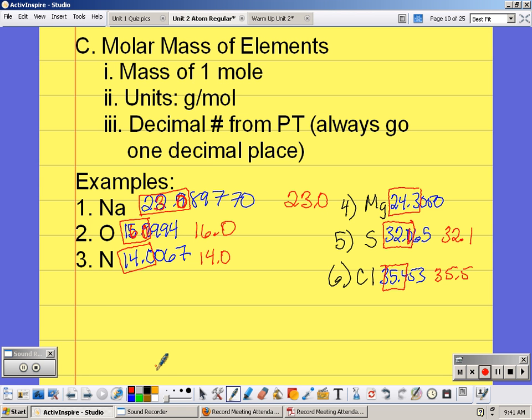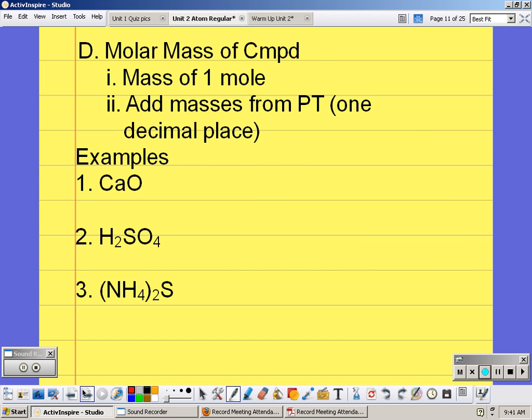Now molar mass is easy if it's just an element, because you're just copying down the number. But if we're talking about a compound, more than one type of atom, then we're going to need to add them from the periodic table. So I know I have in number one two elements, because I have two capital letters.